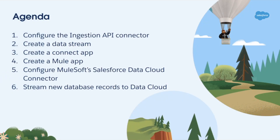Here's our agenda. First, we're going to configure the ingestion API with the schema from our database. The ingestion API provides a RESTful interface to load data into Data Cloud — it offers both a bulk and a streaming pattern, but we're going to be streaming JSON data. Next, we'll create a data stream, which also creates an associated data lake for our records. We'll also create a connected app that the MuleSoft connector will use to request an access token and make API calls. Finally, we'll create a Mule application, configure the Data Cloud connector, and build a flow that calls the ingestion API when new records are added to the database.